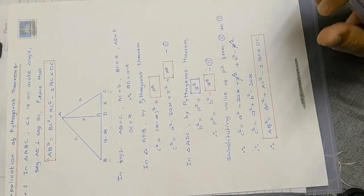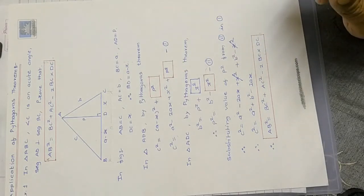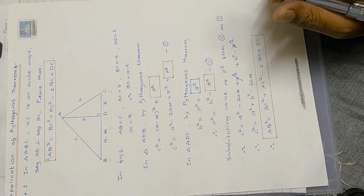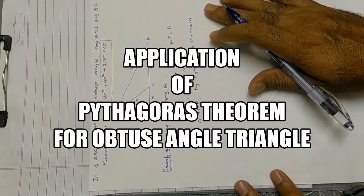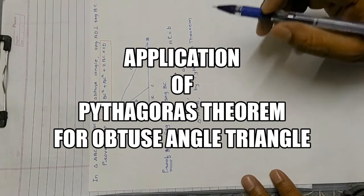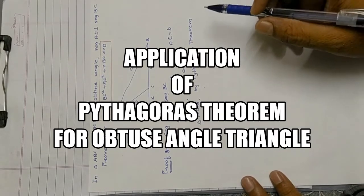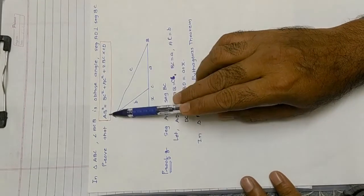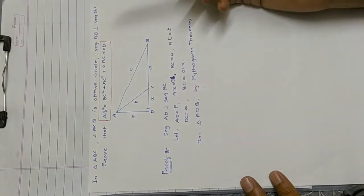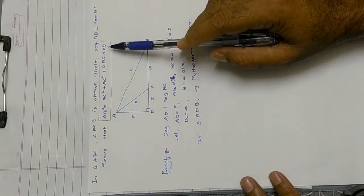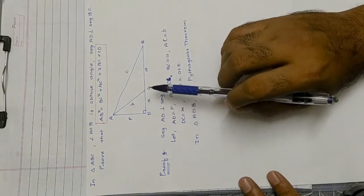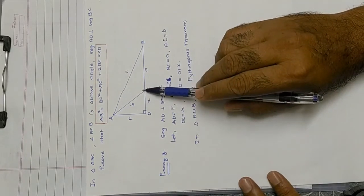Now for the second part — the obtuse angle triangle. We have seen that for the acute angle triangle: AB² = BC² + AC² − 2·BC·CD. Now for the obtuse angle triangle at angle C, we draw perpendicular AD to BC extended.